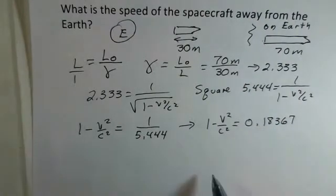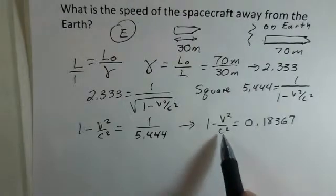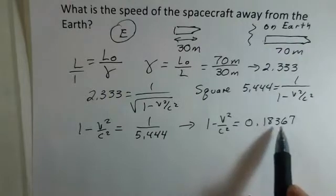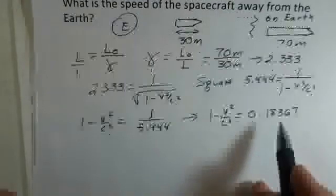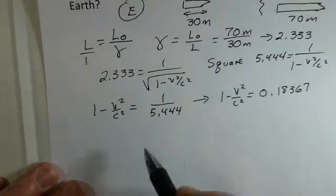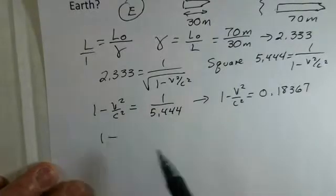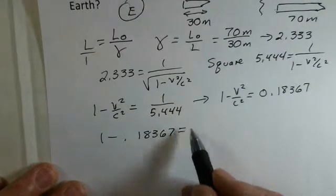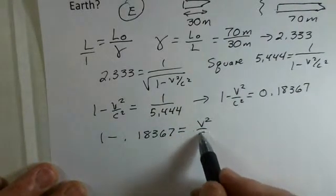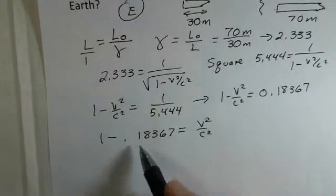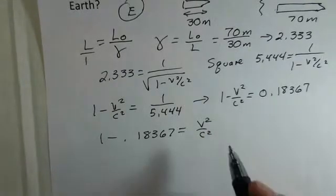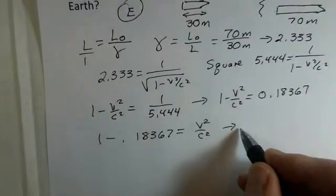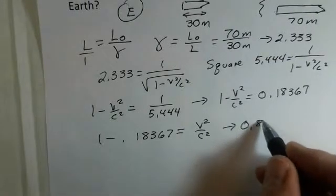You should be pausing once in a while and check these numbers on your own calculator. Now I'm going to add v² over c² to both sides. I'm going to subtract 0.18367 from both sides. Writing it out: 1 minus 0.18367, and over here positive v² over c². I can process the left side—that's just two numbers—so I have 0.8163 equals v² over c².